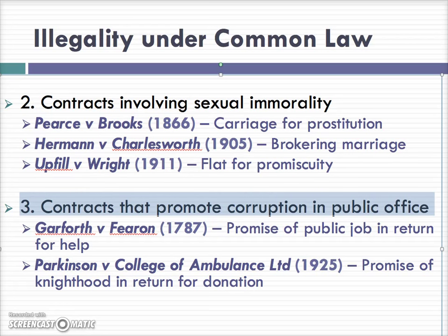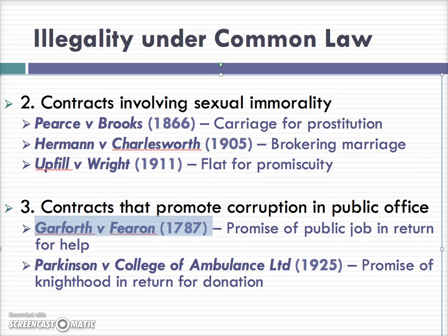The third category of illegality under common law are contracts that promote corruption in public office. In Garforth v Fearen, the parties agreed that Garforth would help Fearen obtain a public office, and in return Fearen would ensure that persons nominated by Garforth were appointed, for instance as deputies. In Parkinson v College of Ambulance, Parkinson had been told that if he made a £3,000 donation he could obtain a knighthood. He gave the donation but never received a knighthood. This contract too was held to be void and unenforceable.